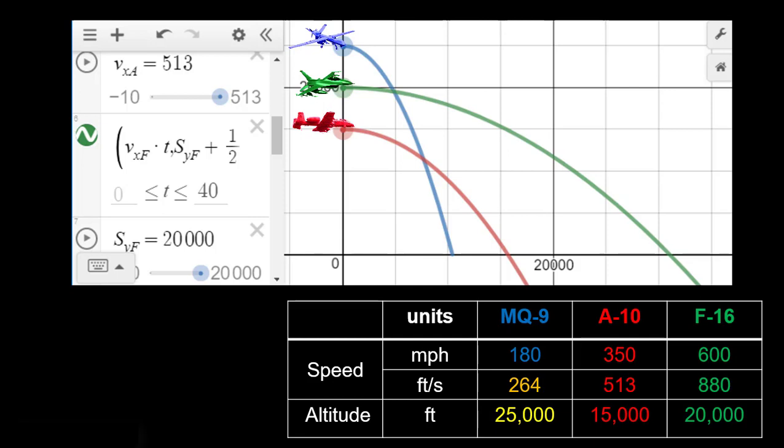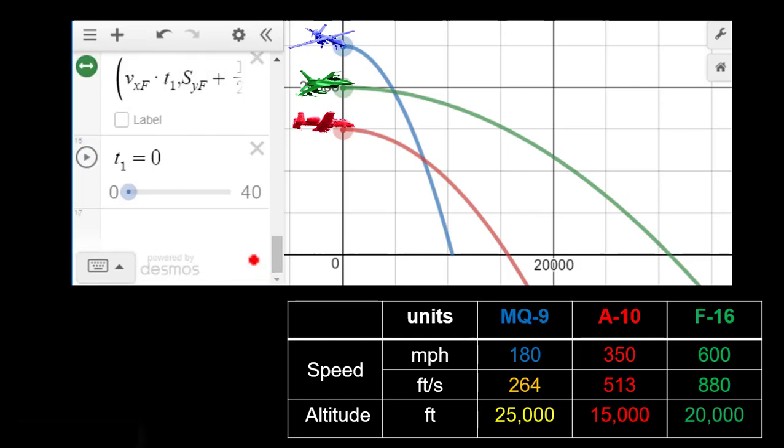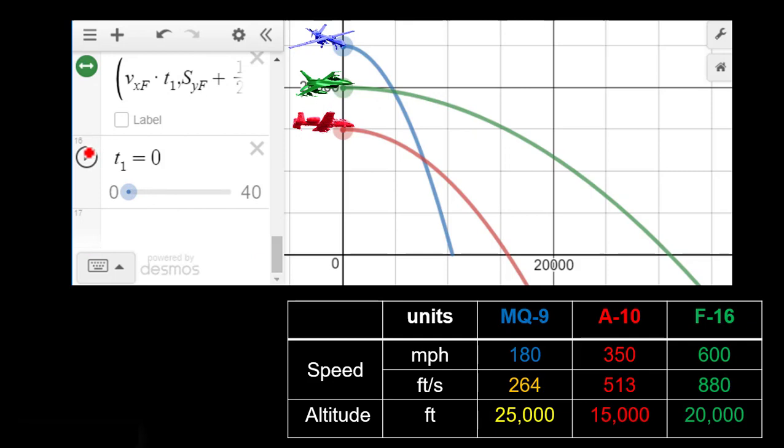Next question was, which of these bombs would land first? So thankfully we've got this in parametric form, so we can go ahead and show that. So I can animate T, and as you can see, this A-10 is going to drop first, followed by the F-16, and lastly the MQ-9, which shouldn't come as a huge surprise, because we modeled the downward acceleration as constant. So our A-10, of course, was the lowest, so it was going to hit first.